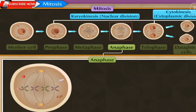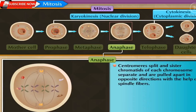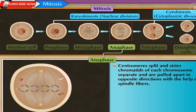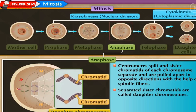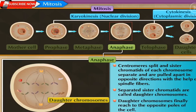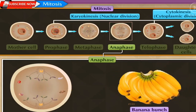In anaphase, centromeres split and thereby sister chromatids of each chromosome separate and are pulled apart in opposite directions with the help of spindle fibers. These separated sister chromatids are called daughter chromosomes. When each set of chromosomes reaches the two opposite poles of the cell, they appear like a bunch of bananas.